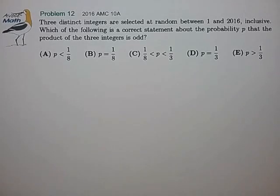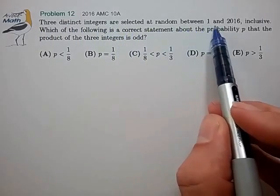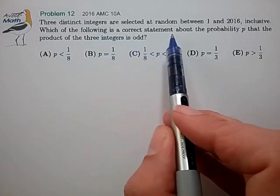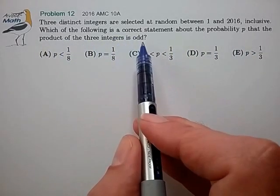Hi, this is problem 12 from the AMC 10A. Three distinct integers are selected at random between 1 and 2016 inclusive. Which of the following is a correct statement about the probability p that the product of the three integers is odd?